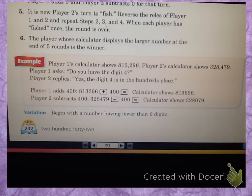Player one adds 400, so they're going to take their number that they have in their calculator, and they're going to add 400 to it, and then they have a new number. Player two is going to subtract 400, and now they have a new number, and that just continues. So that would be one round once each player has a turn.